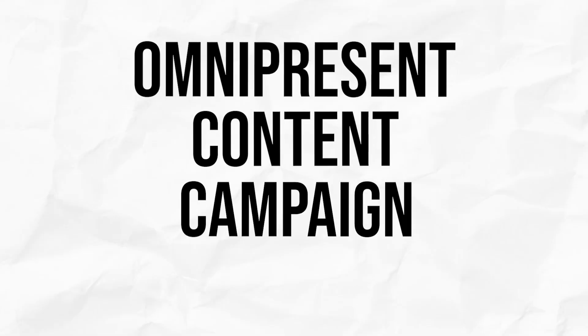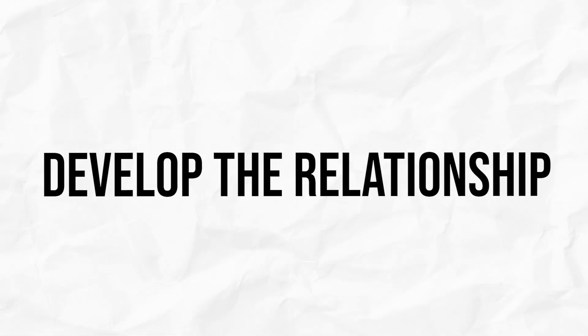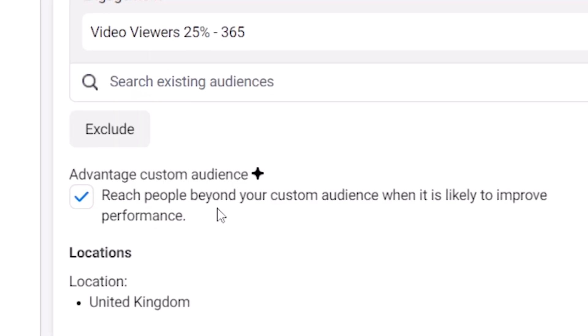Then there's the omnipresent content campaign structure, where you take a small group of people — typically a warm audience — and put lots of different ads in front of them over an extended time period to really develop the relationship, deliver value, demonstrate your expertise, and help convince them to purchase. This is often used for very high-ticket, expensive products requiring a lot of lead nurturing. If you've got Advantage Custom Audience selected for omnipresent content, instead of nurturing a specific group of leads you've generated, those ads go out to random cold audiences — that's just a waste of your budget and completely ineffective.